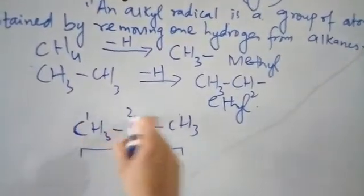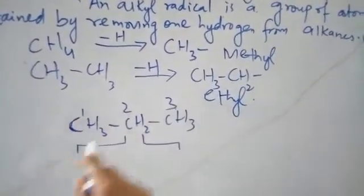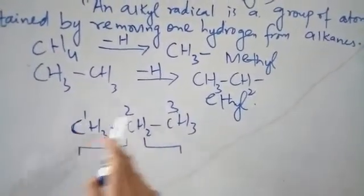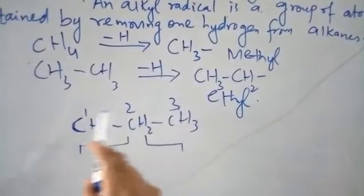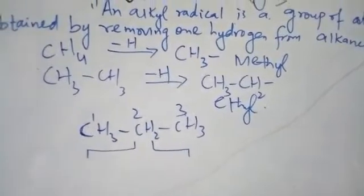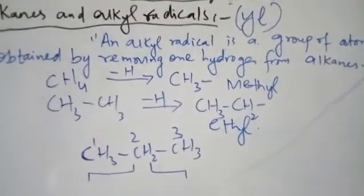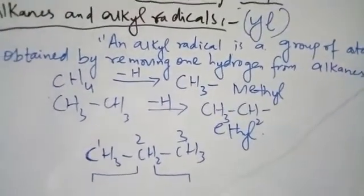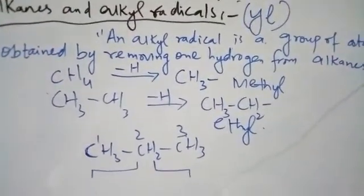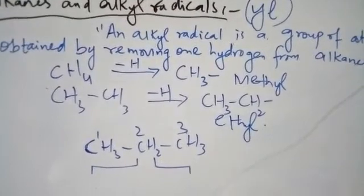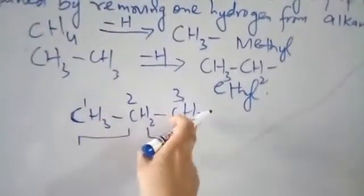As there are three carbons, we look at the terminal carbons because they are the same — both are terminal carbons and are considered equivalent. So if we remove hydrogen from one terminal carbon, it is equivalent to removing from the other terminal carbon.